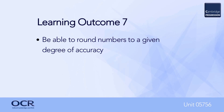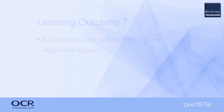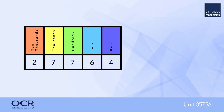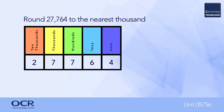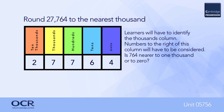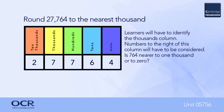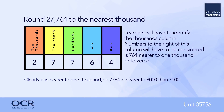For learning outcome number seven, learners need to be able to round numbers to a given degree of accuracy. There are three assessment criteria: two are concerned with rounding, and one requires an appreciation of context to decide whether to round up or round down. Learners must be able to round numbers up or down to the nearest power of ten. For example, to round twenty-seven thousand, seven hundred and sixty-four to the nearest one thousand: identify the thousands column, then consider the numbers to the right — seven hundred and sixty-four is nearer to one thousand than to zero, so seven thousand rounds up to eight thousand, giving twenty-eight thousand.